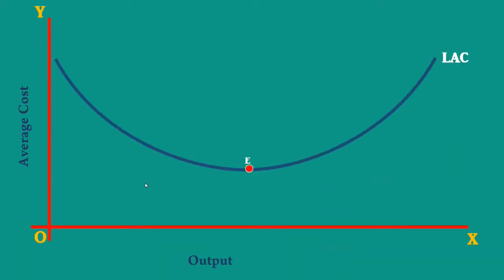Look at this graph. E is the minimum point of the Long Run Average Cost Curve. Firm with a plant represented by the short run average cost curve SAC2 is operating at this point.